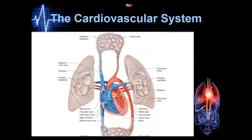The right ventricle contracts, opens the pulmonary valve with pressure, and pushes blood into what is called the pulmonary trunk. This is the left pulmonary artery and this is the right — it is an artery, and it is blue. Arteries carry blood away from the heart. The blood goes through the lungs, unloading carbon dioxide and picking up oxygen — that's why it turns red.